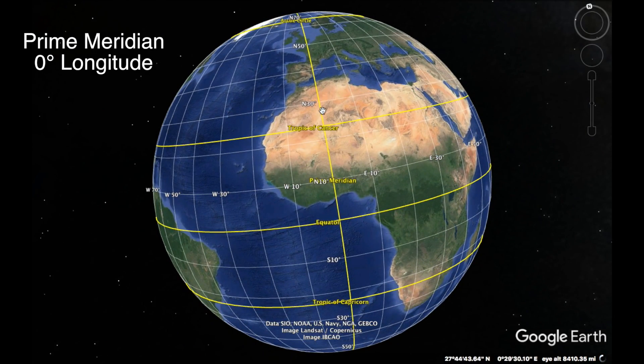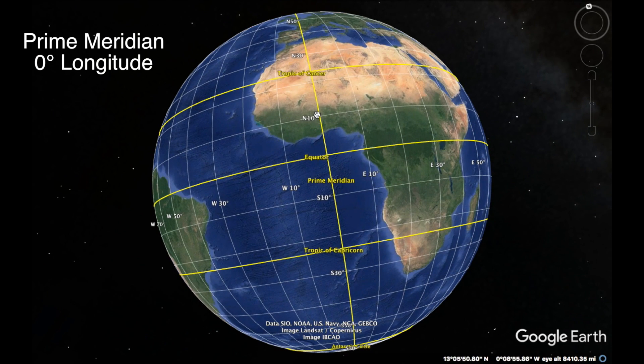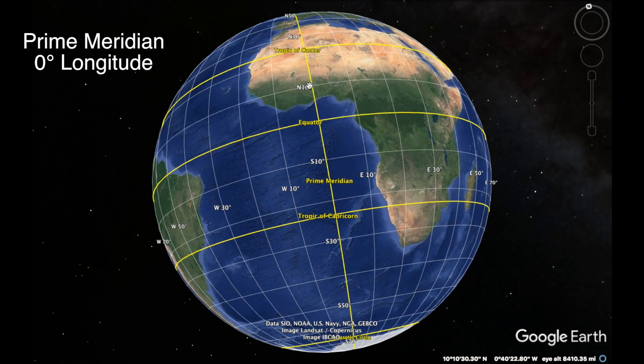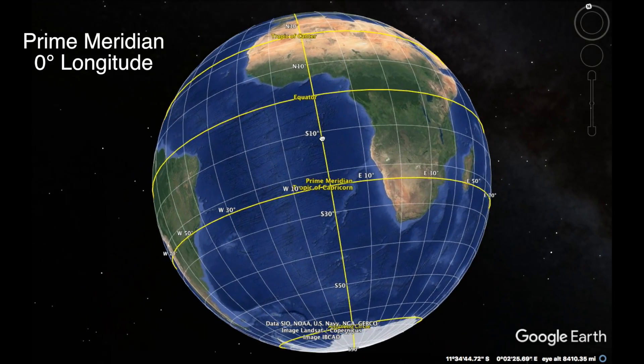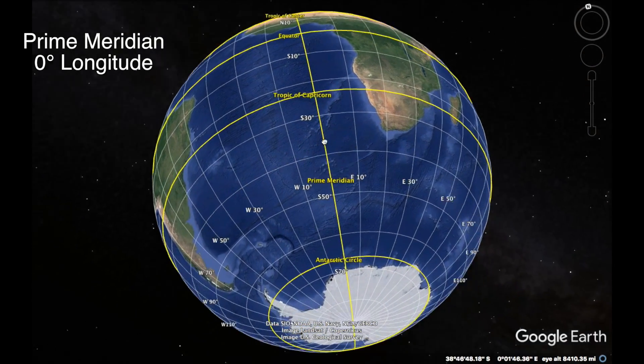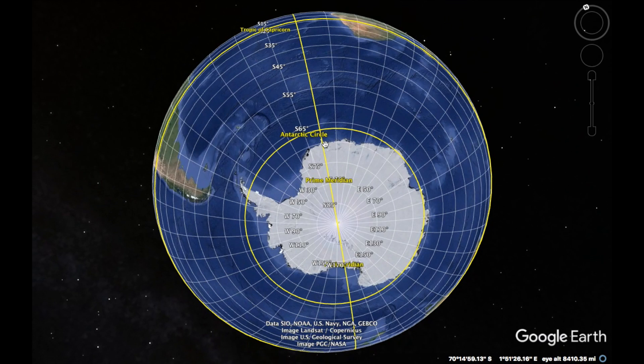It also goes through Africa and through the Atlantic Ocean into the Southern Ocean down to Antarctica, where it makes it to the South Pole. So that is one line of longitude, and all the other lines that run north and south as circles around the globe are also lines of longitude.